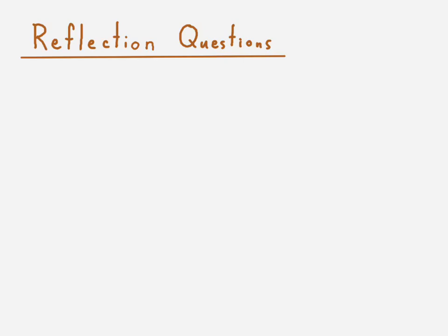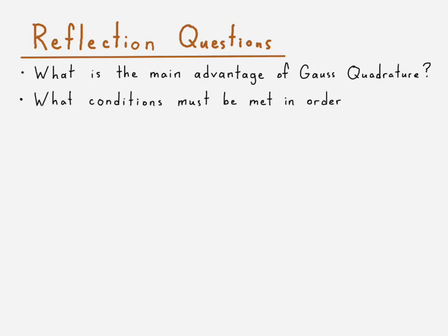So now we'll move on to the reflection questions. The first reflection question is, What is the main advantage of using Gauss quadrature? The next is, What conditions must be met in order for Gauss quadrature to be effective?